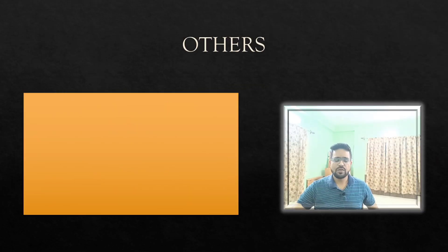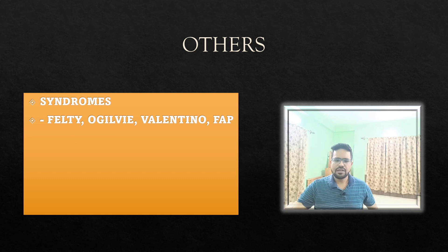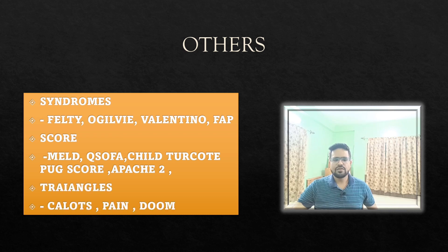Examples of important syndromes asked include Felty syndrome, Valentino syndrome, and familial polyposis syndrome. Important scores include MILK score, qSOFA score, Child-Turcotte-Pugh score, and Apache 2. Important triangles include Calot's triangle, pain triangle, triangle of doom, and Moreau triangle. These are repeatedly asked in surgery.